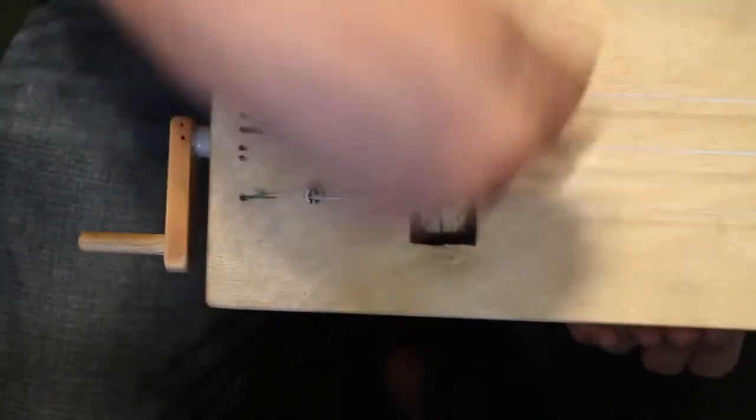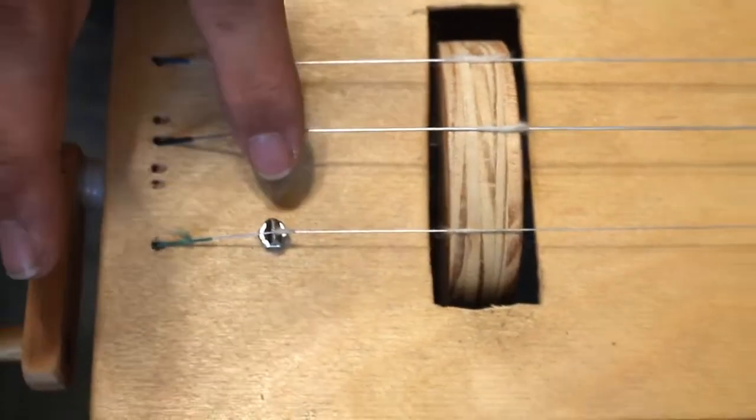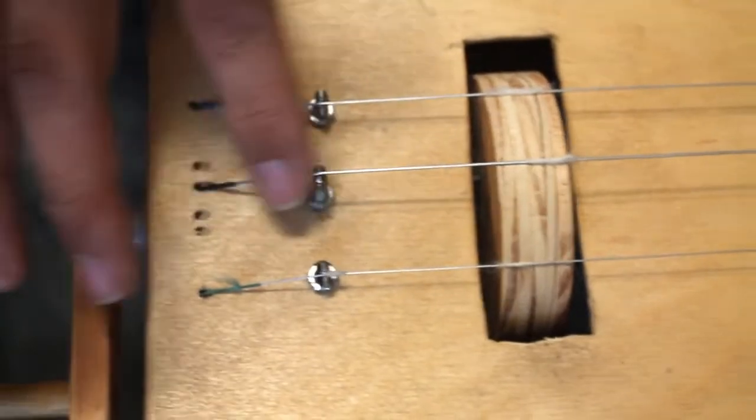So, why there's a double notch on this one. Originally, I was going to have a double set of strings here. It's the same reason why I've got that same double notch here, and four tuning pegs instead of three.